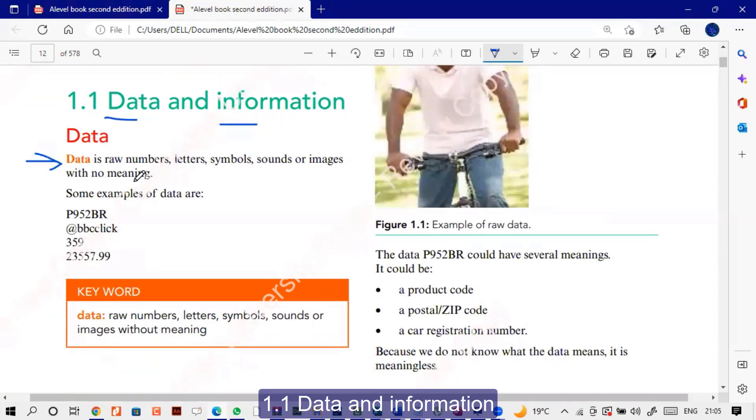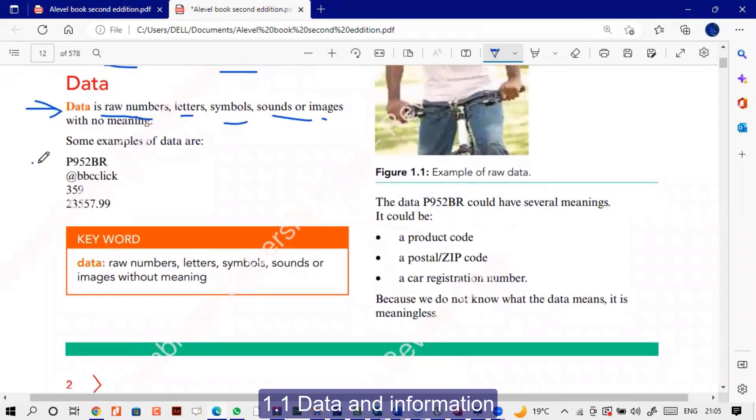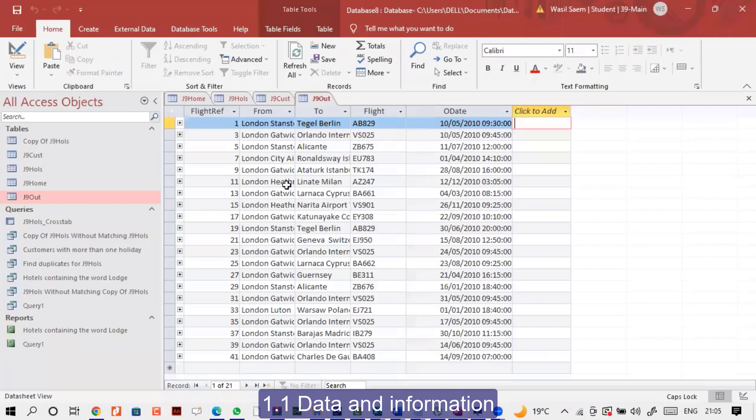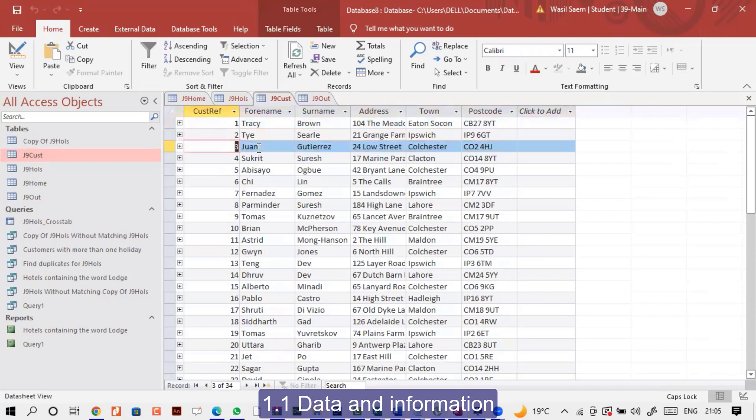Data, in simple words, means any raw number, letters, symbols, sound, or images. For example, if I say this particular code is data, at the rate of is data, this number is data. So these are all my data. If I talk about this particular row, it is data. Three, John, this is data. What are the records inside? I have data. This is a table of data. So basically this is your data.